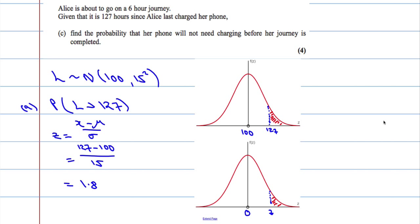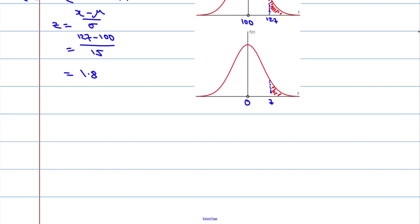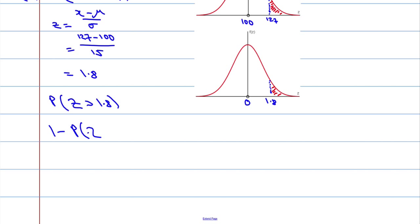So z is 1.8. Returning to the diagram, I want to know the area of the curve — essentially the probability that the standard normal distribution is greater than 1.8. The standard normal distribution only deals with probabilities to the left, so we do 1 minus the probability that z is less than 1.8. If we work out the probability we're less than 1.8 — the green region — and do 1 minus that, it gives us the red region.